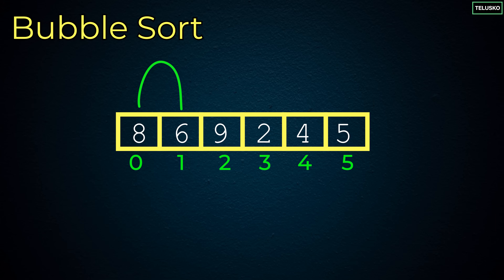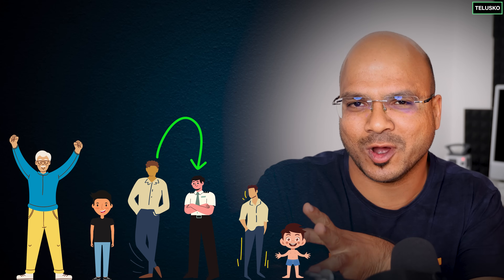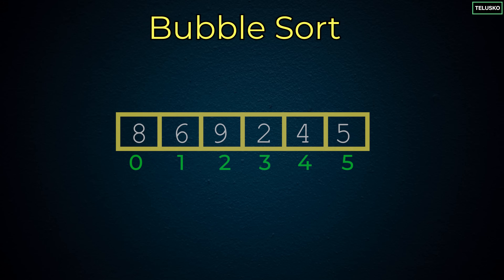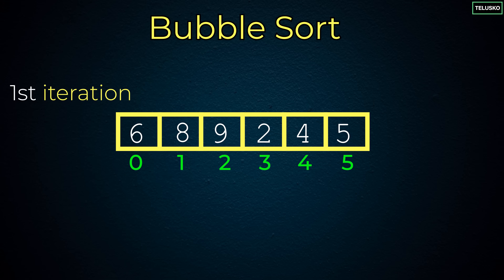What you do is compare 2 values at a time. If you put 6 people in front of you and want to sort them by height, you compare 2 people at a time and then swap them. So let's say we have 8 and 6. You want to make sure the biggest element goes to the end in the first iteration. You compare the first 2 values — if the first is greater than the second, you swap. Swapping is very important here.